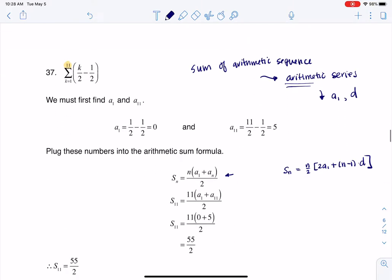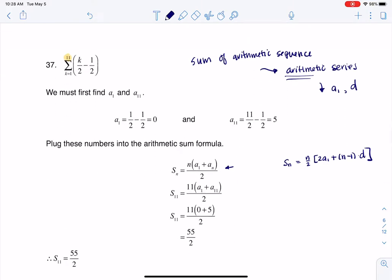So you can use either of these formulas. It just depends on what is easier for you to find. What I mean by that is if you look at these formulas in terms of what they have in common, they both have an A sub 1 in them. They both have an N in them. You can see N here, and N here and here.